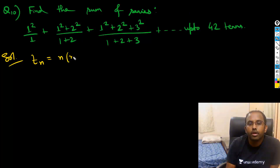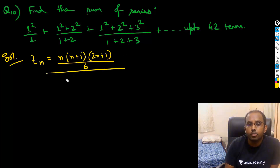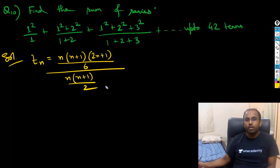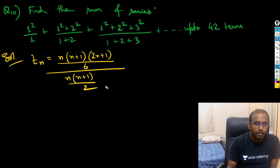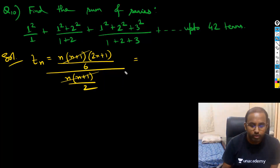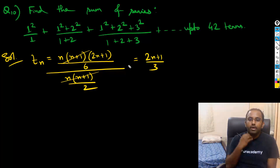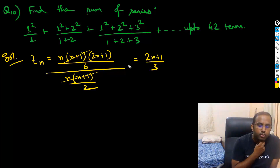The sum of 1² + 2² + ... + n² is n(n+1)(2n+1)/6. The denominator is 1 + 2 + ... + n = n(n+1)/2. Now these terms get cancelled, and what I'm left with is (2n+1)/3. So I get my Tₙ = (2n+1)/3.